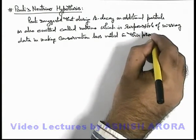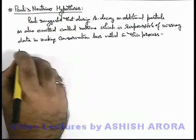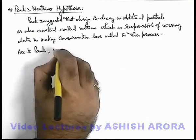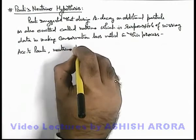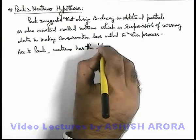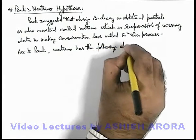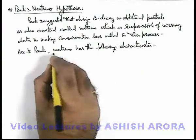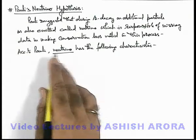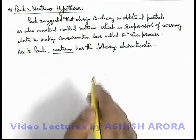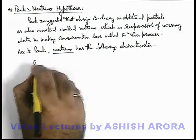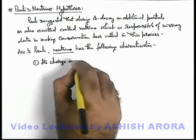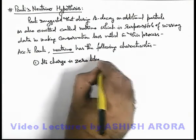After studying the characteristics of the neutrino, we'll see how by using neutrino emission in beta decay the 3 conservation laws will hold true. The very first characteristic about the neutrino is: its charge is zero, like a photon.